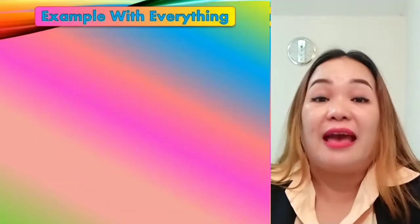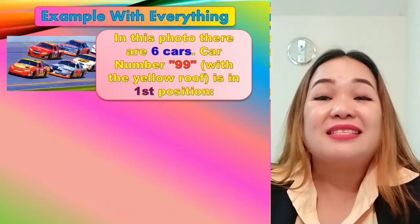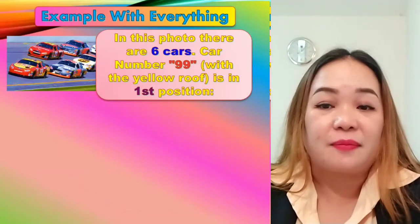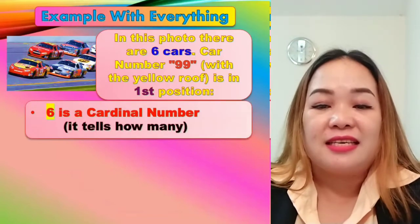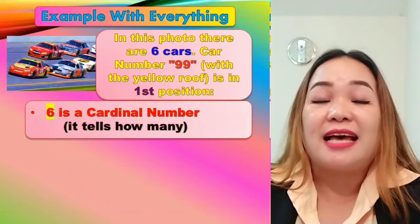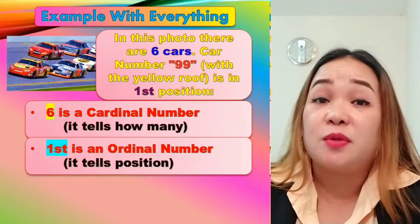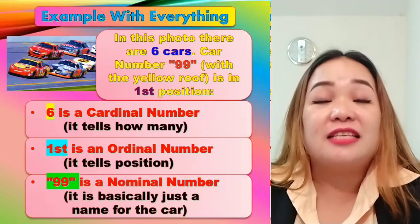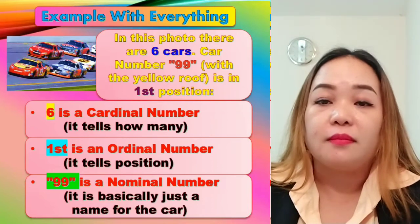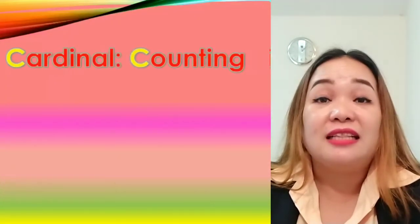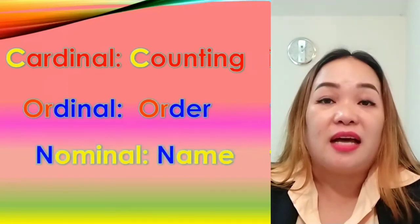Now let's have an example with everything. Take a look at this picture. In this photo, there are six cars. Car number 99 with a yellow roof is in first position. So six is a cardinal number because it tells us how many. First is an ordinal number because it tells position. And 99 is a nominal number — it is basically just a name for the car. Remember: cardinal is for counting, ordinal is order, and nominal is name.